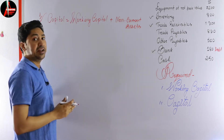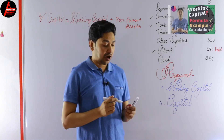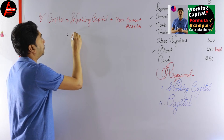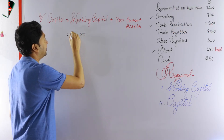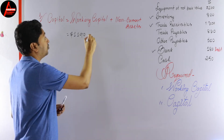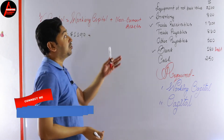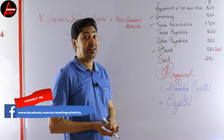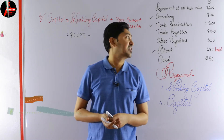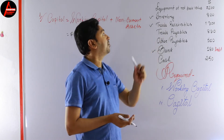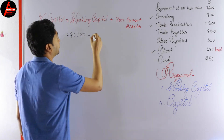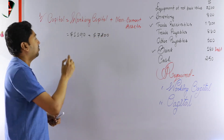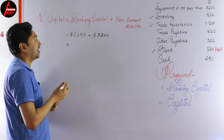Using the first method, capital equals working capital plus non-current assets. In the previous video I showed how to calculate working capital, and the value was 1,190 dollars. Now we need our non-current assets. In this question, equipment is the only non-current asset, and its value is 7,200 dollars.